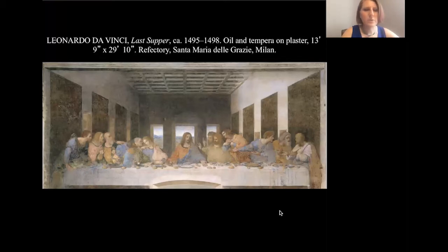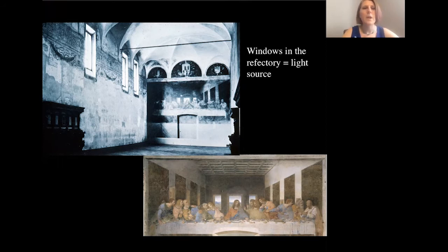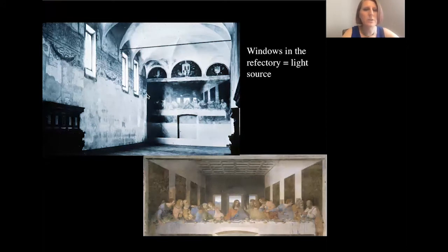The light source for this painting is actually the light source in the room where it is painted. It's still in situ — still in the place where it was originally painted, which is a refectory, a kind of dining hall near the city of Milan in Italy. He's using the light source from the windows on the wall and incorporating that into the painting, which gives it even more of this naturalistic quality.